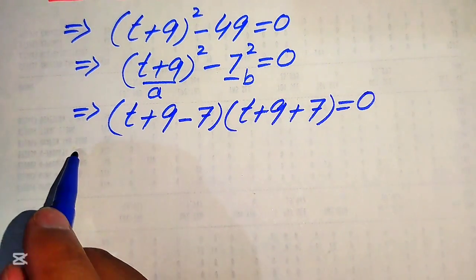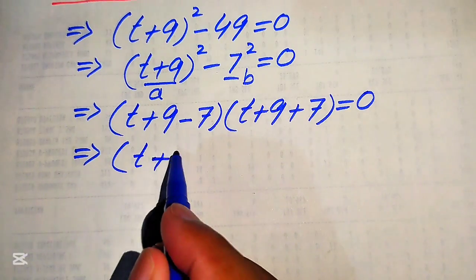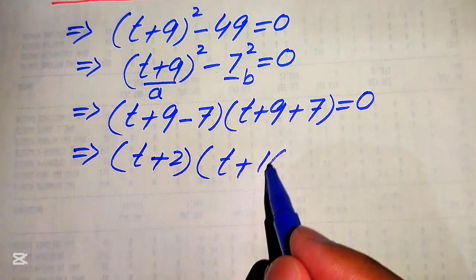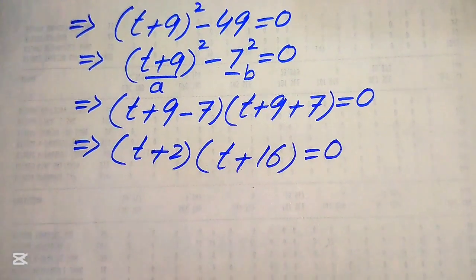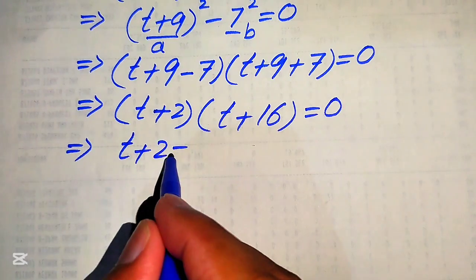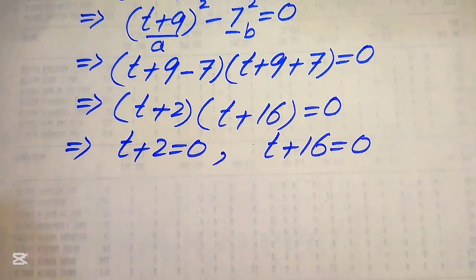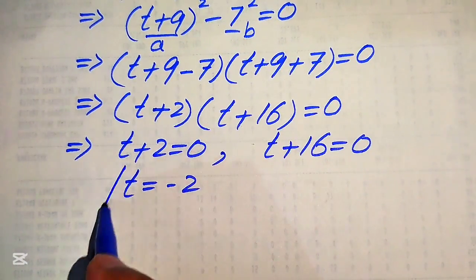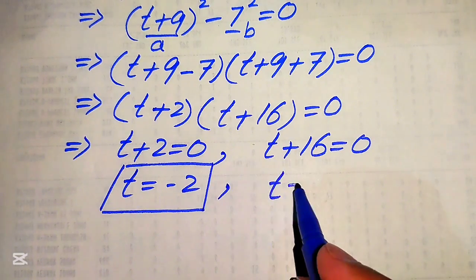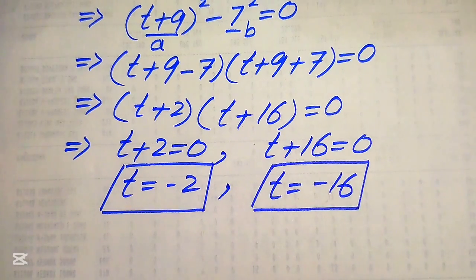In the next step we add or subtract like terms: (t + 9 - 7) gives (t + 2), and (t + 9 + 7) gives (t + 16), so (t + 2)(t + 16) = 0. Dividing into two cases: t + 2 = 0 gives t = -2 as the first real root, and t + 16 = 0 gives t = -16 as the second real root.